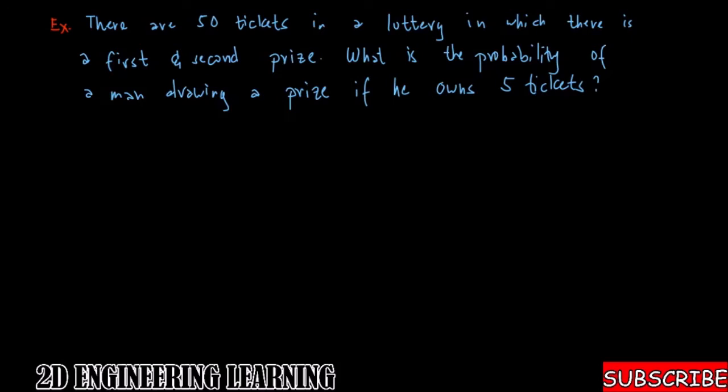Okay, so we have this problem here, an example on probability. The problem states: there are 50 tickets in a lottery in which there is a first and second prize. Let's clear up our problem here. What is the probability of a man drawing a prize if he owns five tickets?